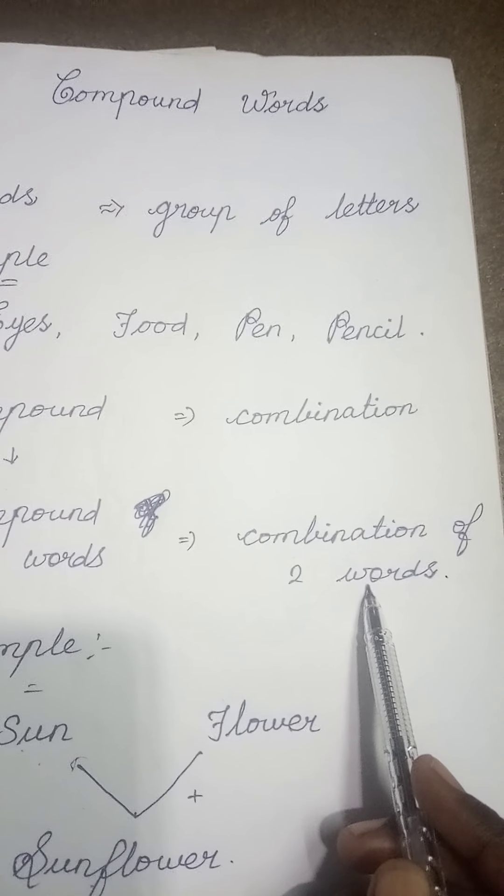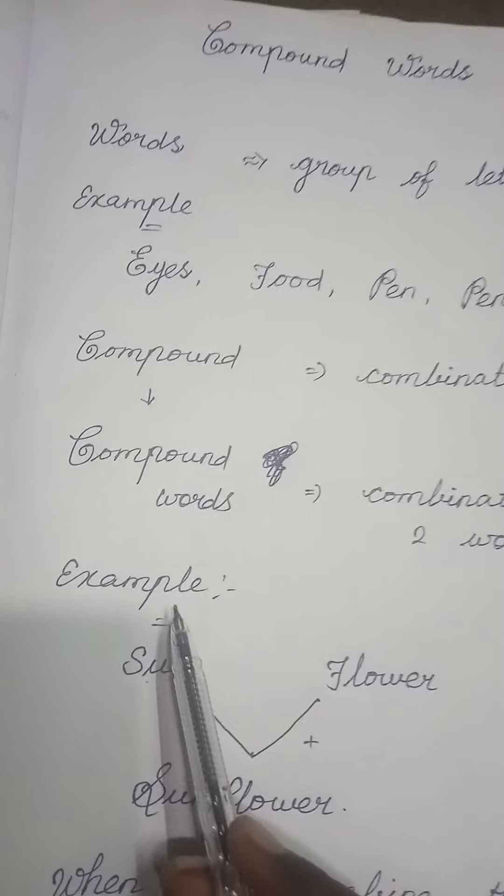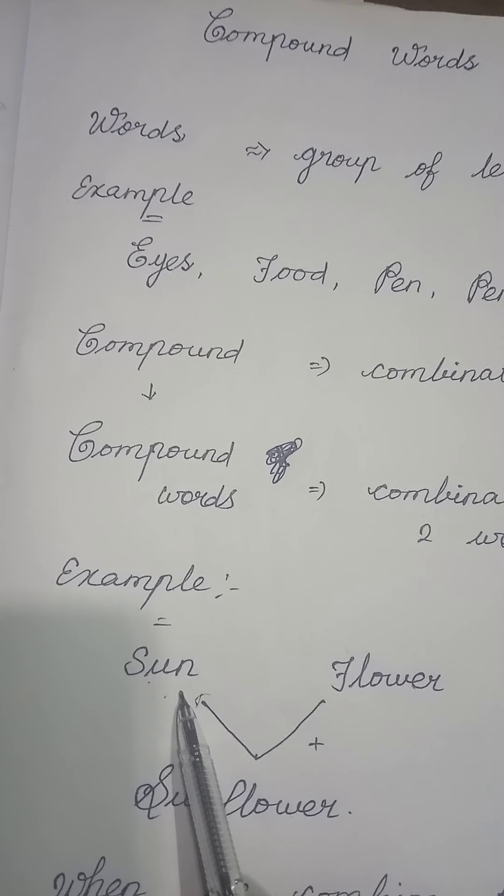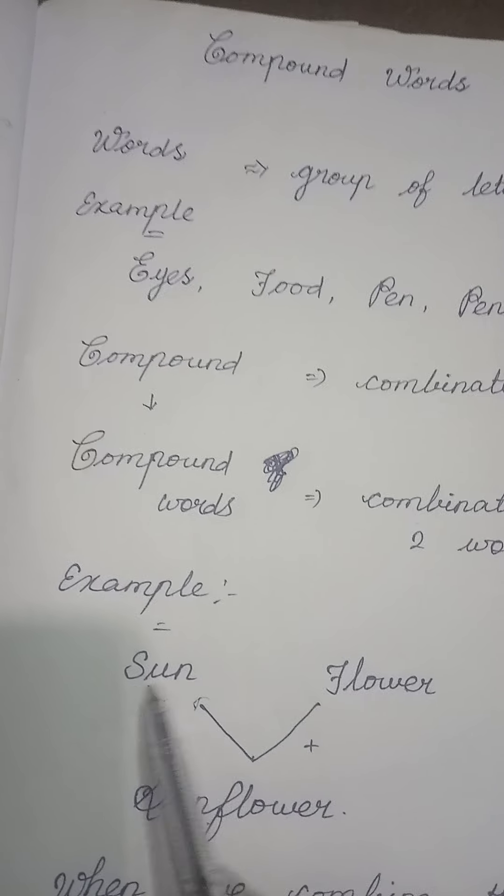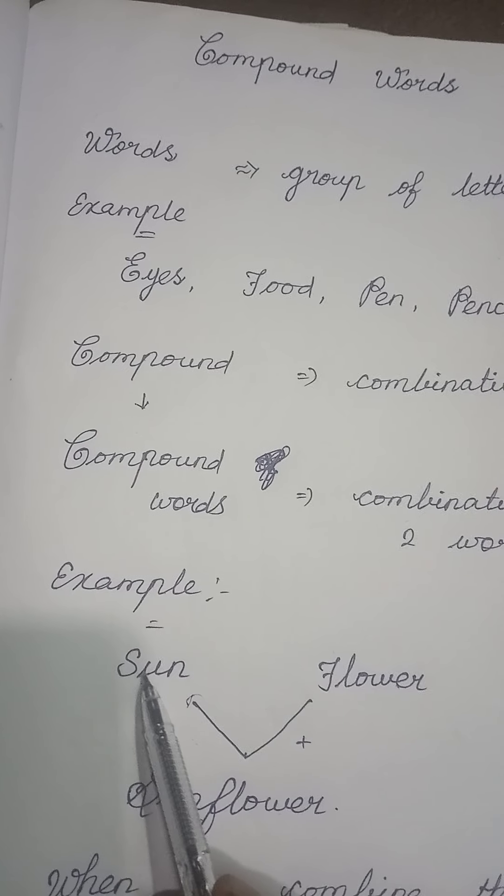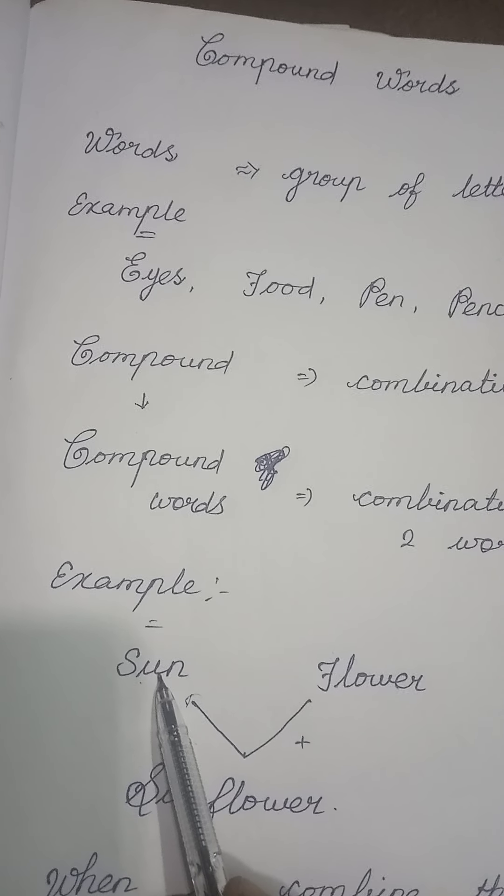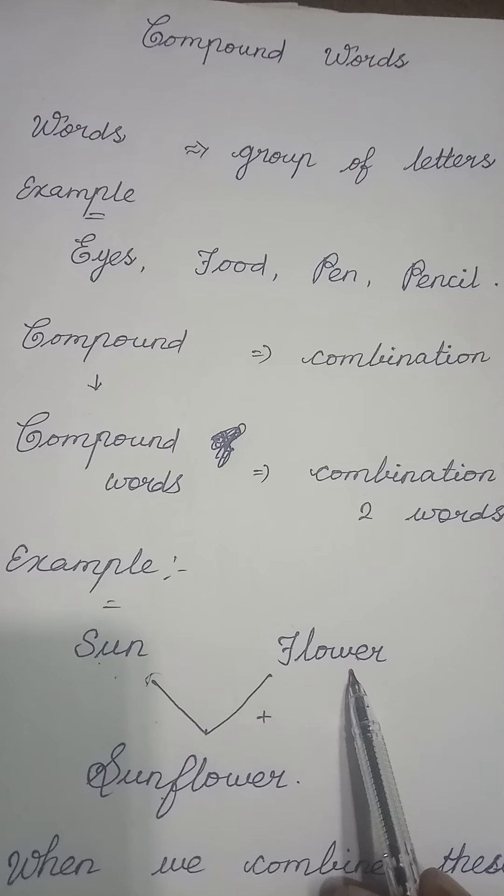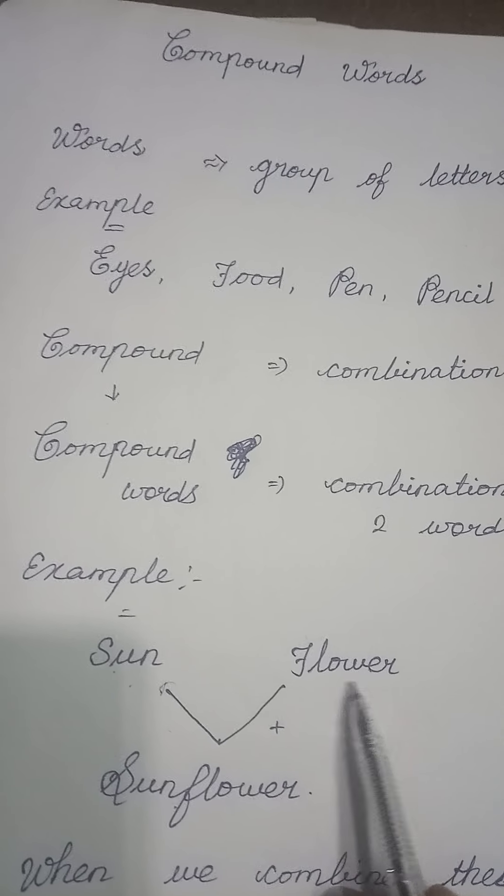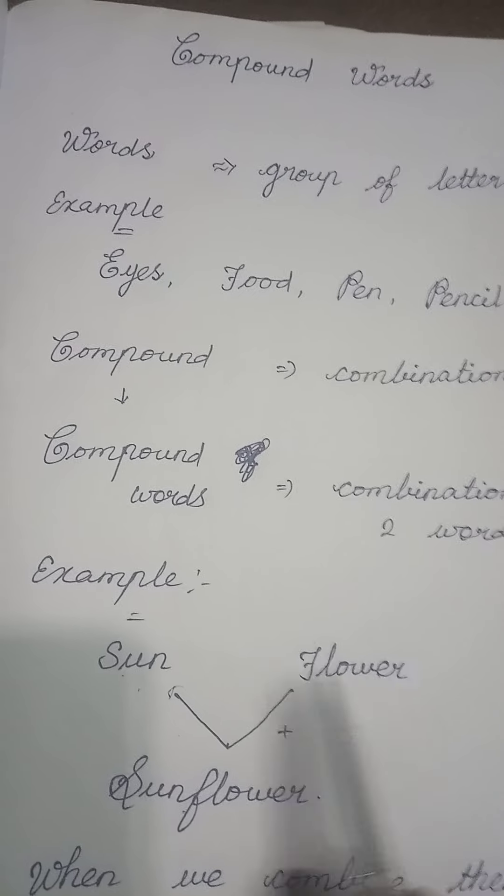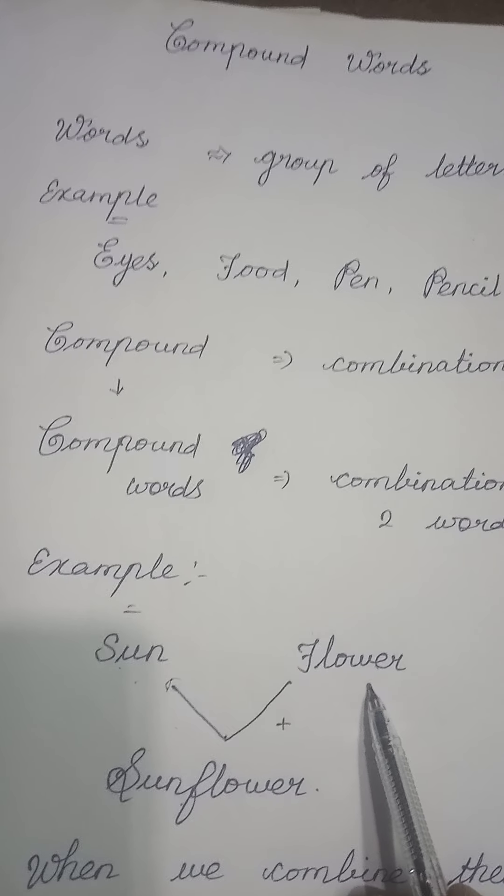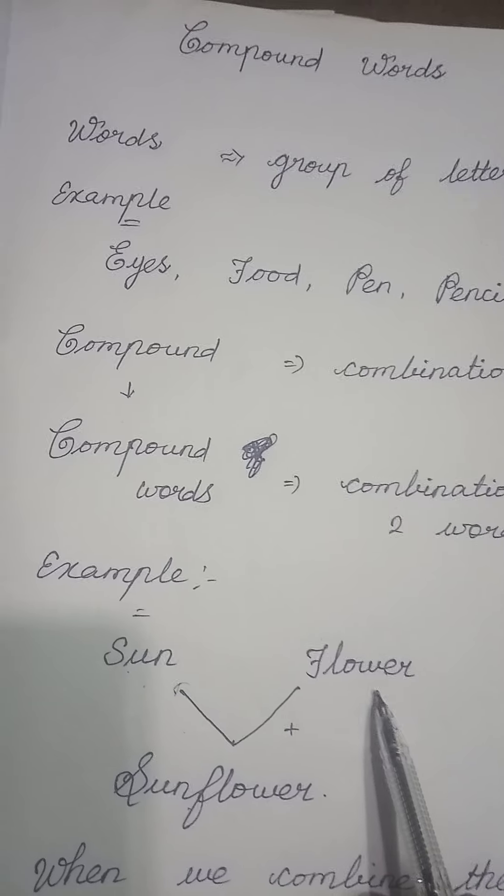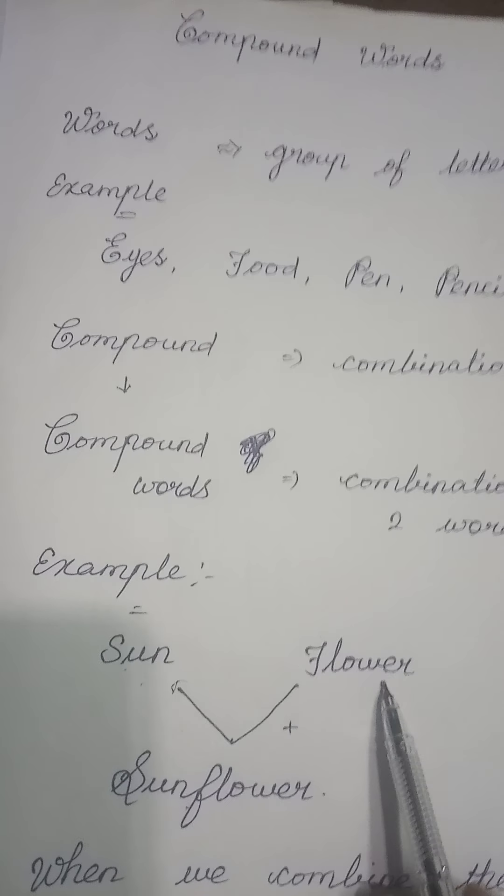You see, for example, sun. What does mean by sun? It is a star head of the solar system. That is the meaning for the sun. It gives us light and heat. Like the same way, what does mean by flower? This is a flower. This is one word and sun is a word and flower is a word. We will get the flower from the plant. It helps us to make us beautiful.